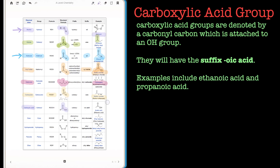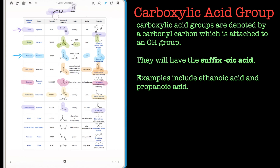The next functional group is the carboxylic acid, and this is denoted as a carbonyl with an OH group attached to the carbon. These are usually drawn like this — so that would be called acetic acid from the acetyl group that's present, or ethanoic acid. So we're using two different naming conventions to describe that molecule in that particular case.